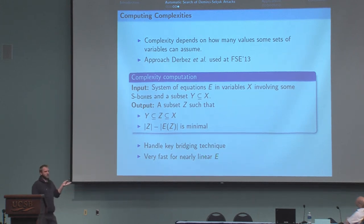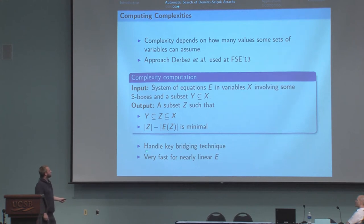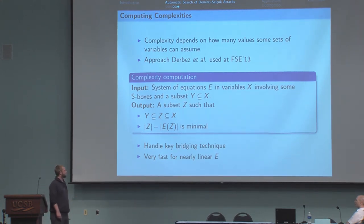In practice, we used this algorithm on the key schedule only. And it's very fast for nearly linear systems of equations. For instance, for the key schedule of AES, it's very fast. And for linear key schedules, it's very, very fast. And it handles some sophisticated techniques as key bridging, for instance. Key bridging is a relation between round keys of the first round and round keys of the last round.